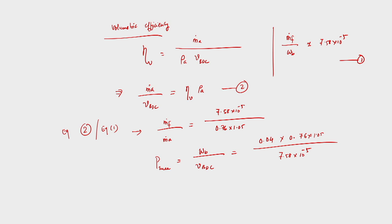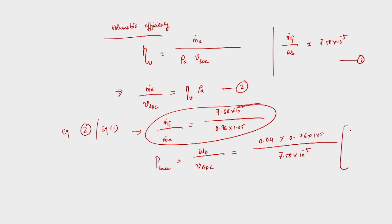Using the fuel-air ratio of 0.04 as given, and combining equations (1) and (2), the mean effective pressure is calculated as 0.42 MPa. This is the final answer for Problem 1.